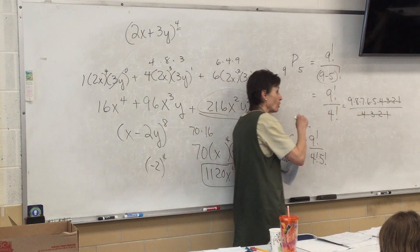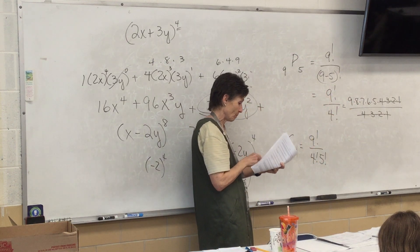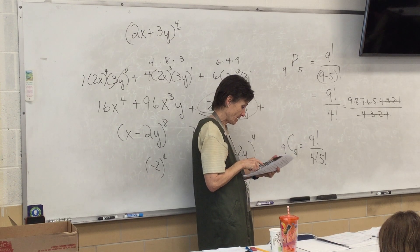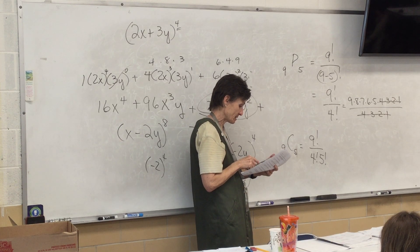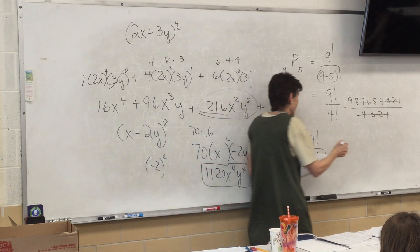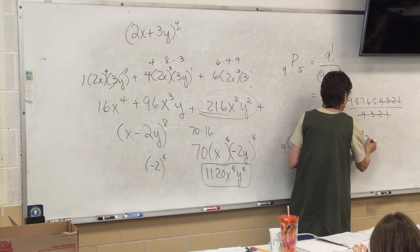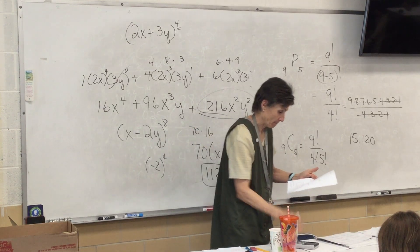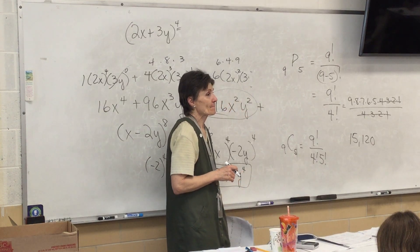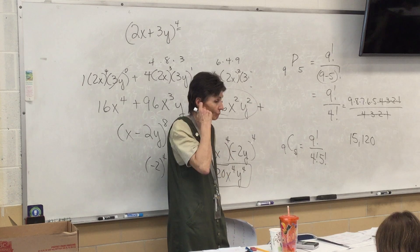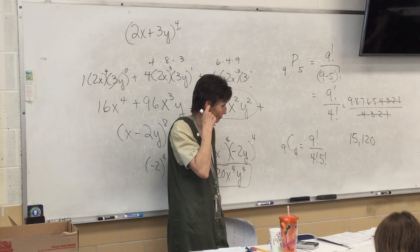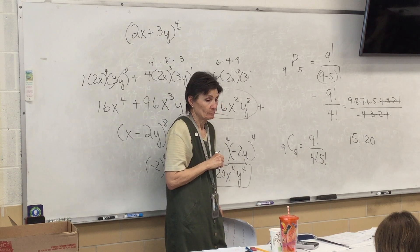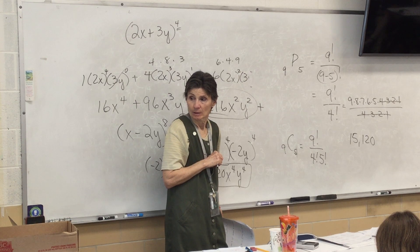So, what do I get? 9 times 8 times 7 times 6 times 5. You get 15,120? Yes.